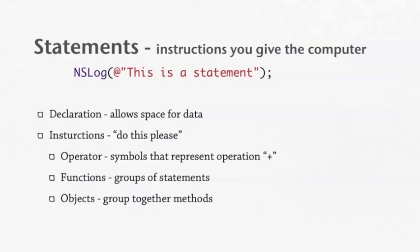Instructions are like 'do this, please' — you're telling the computer to do a specific thing. There are different things that go along with instructions: there's the operator, which is a symbol that represents an operation, like plus, minus, or division. Then there are functions, which are groups of statements, and objects, which are groups of methods together. We'll cover functions and objects in later tutorials.